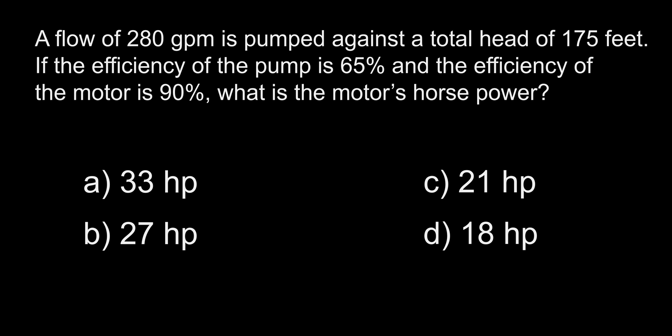A flow of 280 gallons per minute is pumped against a total head of 175 feet. If the efficiency of the pump is 65% and the efficiency of the motor is 90%, what is the motor's horsepower? A. 33. B. 27. C. 21. D. 18 horsepower.